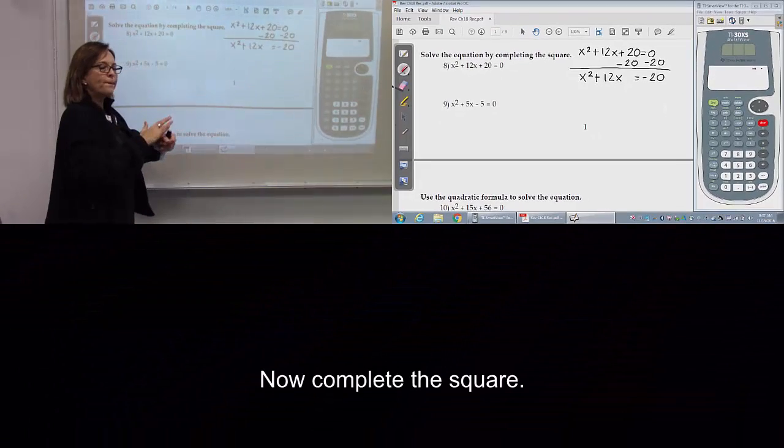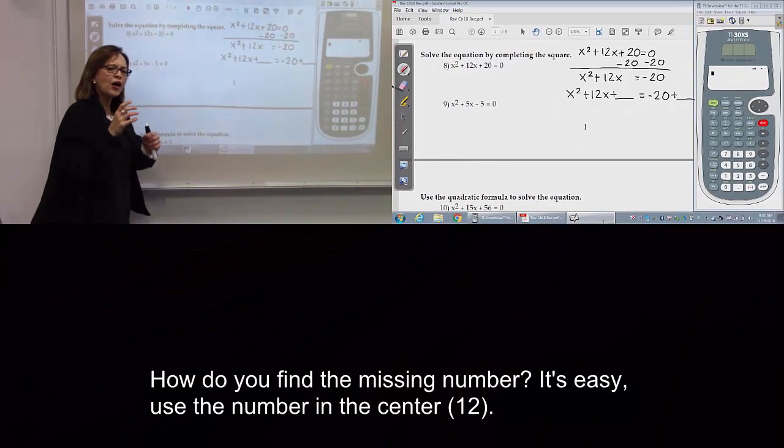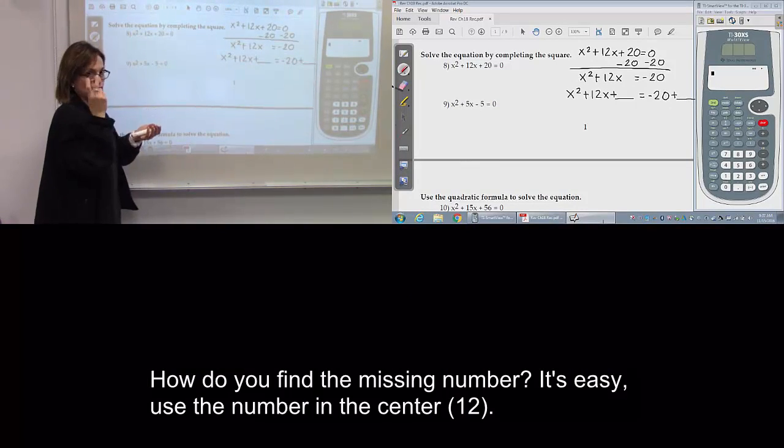Now complete the square. How to find the missing number? Easy. Use the number in the center, 12.